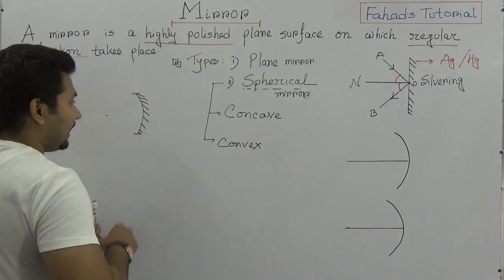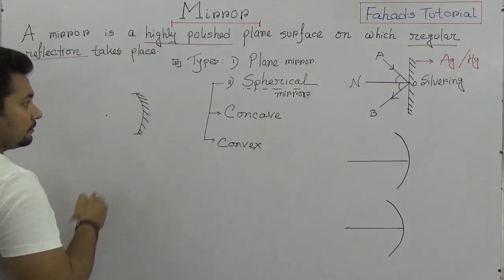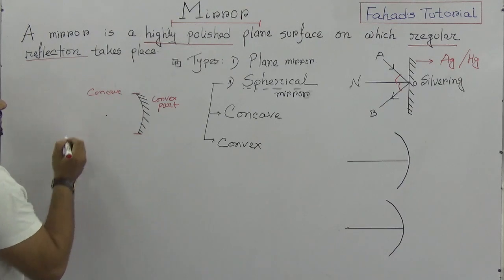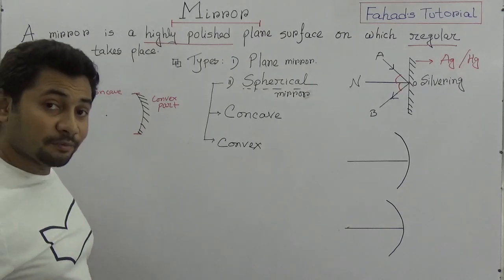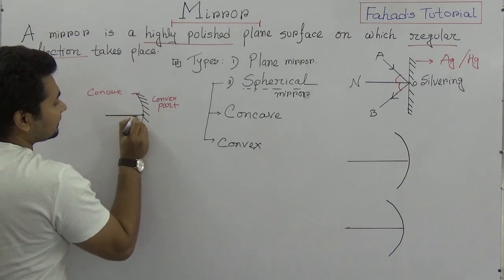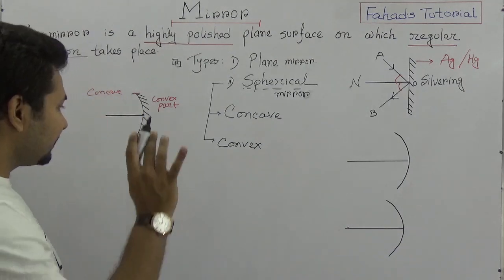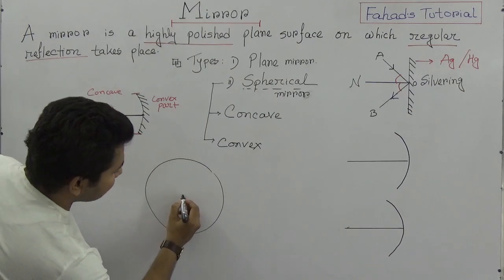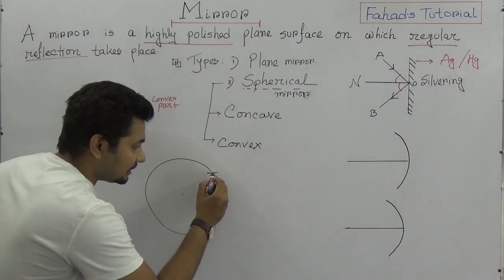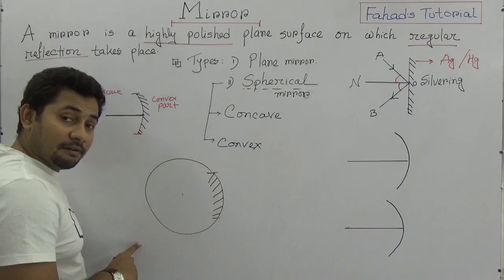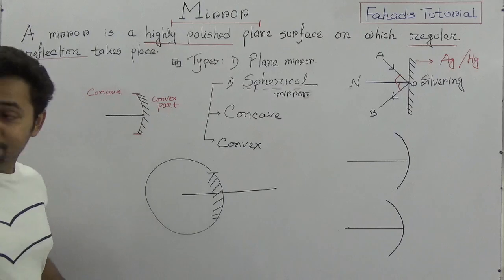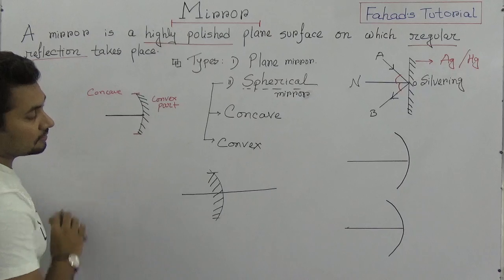In the concave mirror, the concave part is the reflective side. Now think of another sphere: if I take a part of it, silver the inner side, and remove the rest, that part will act as a concave mirror. If instead the silver is on the outer convex side, we get a convex mirror. The concave part and convex part of a sphere lead to two different types of spherical mirrors.